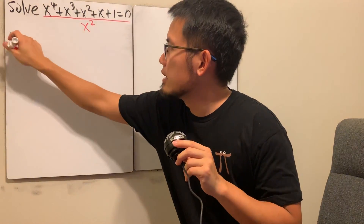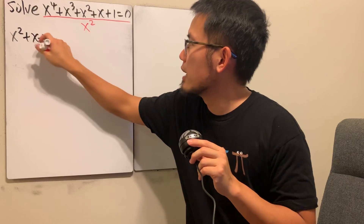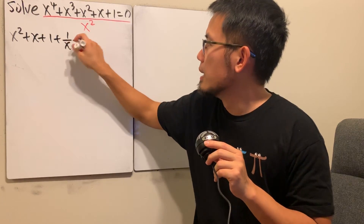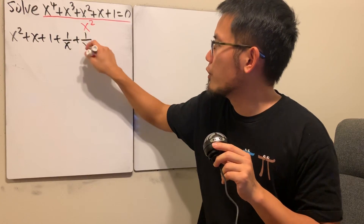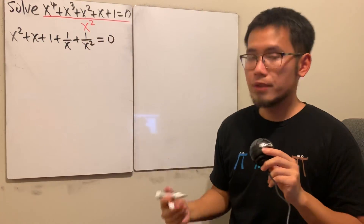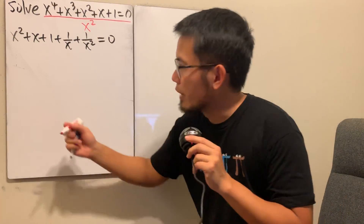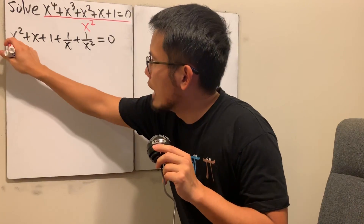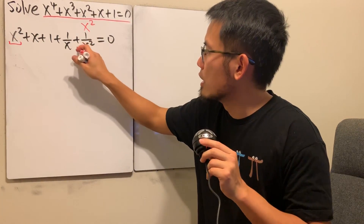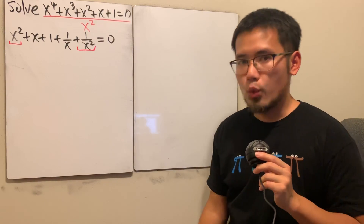After dividing by x², we can change this into a quadratic form. This gives us x² + x + 1 + 1/x + 1/x² equals zero. Right here we have x² and also 1/x².